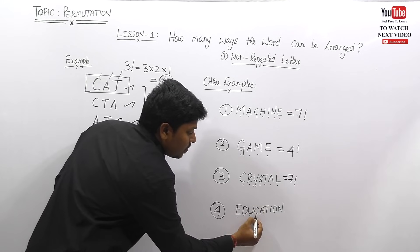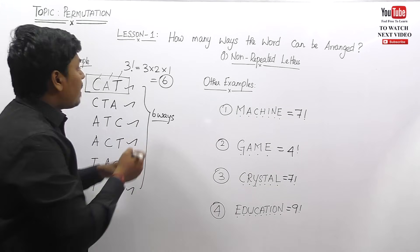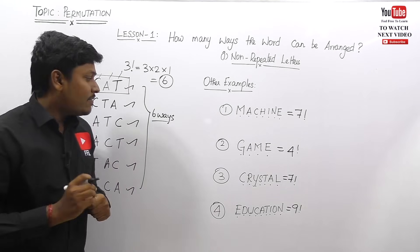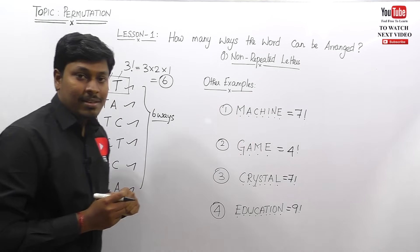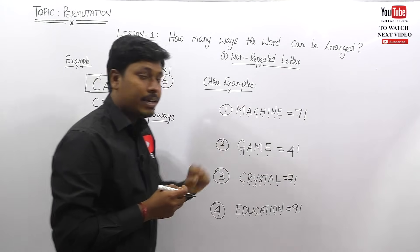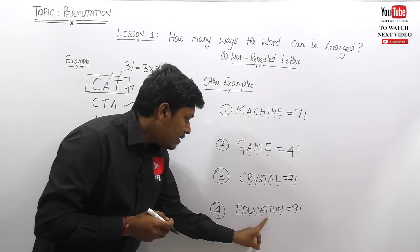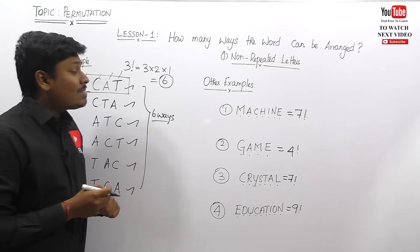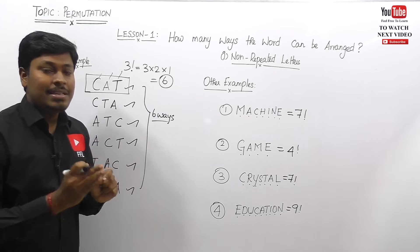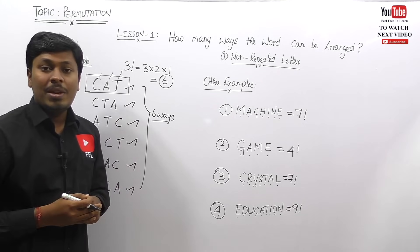For the word EDUCATION — one, two, three, four, five, six, seven, eight, nine — so this is nine factorial. These are all examples of non-repeated letters. In the word MISSION, each letter appears only one time. In EDUCATION, A occurs only once, T only once, E only once. This is called non-repeated letters. When asked how many ways a word can be arranged, first check whether it has non-repeated or repeated letters.